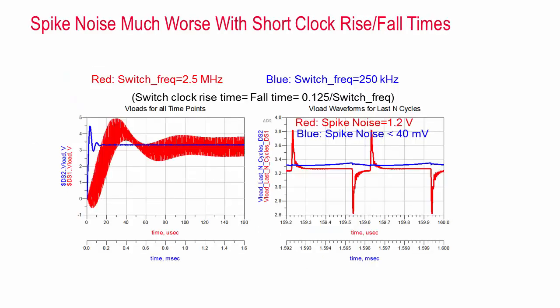This is a small digression, but look what happens when we change the rise and fall times of the switch signals by a factor of 10. This indicates that a layout that works fine with slow clock rise and fall times could have significant problems with faster ones.